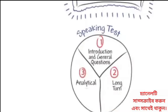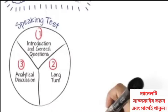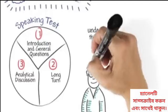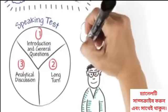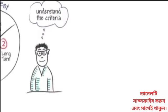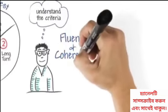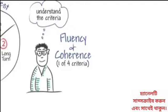And part three is an analytical discussion. It's important to understand the criteria on which you will be tested in the IELTS exam. First, we consider the criteria of fluency and coherence. This is one of four criteria on which you will be tested.